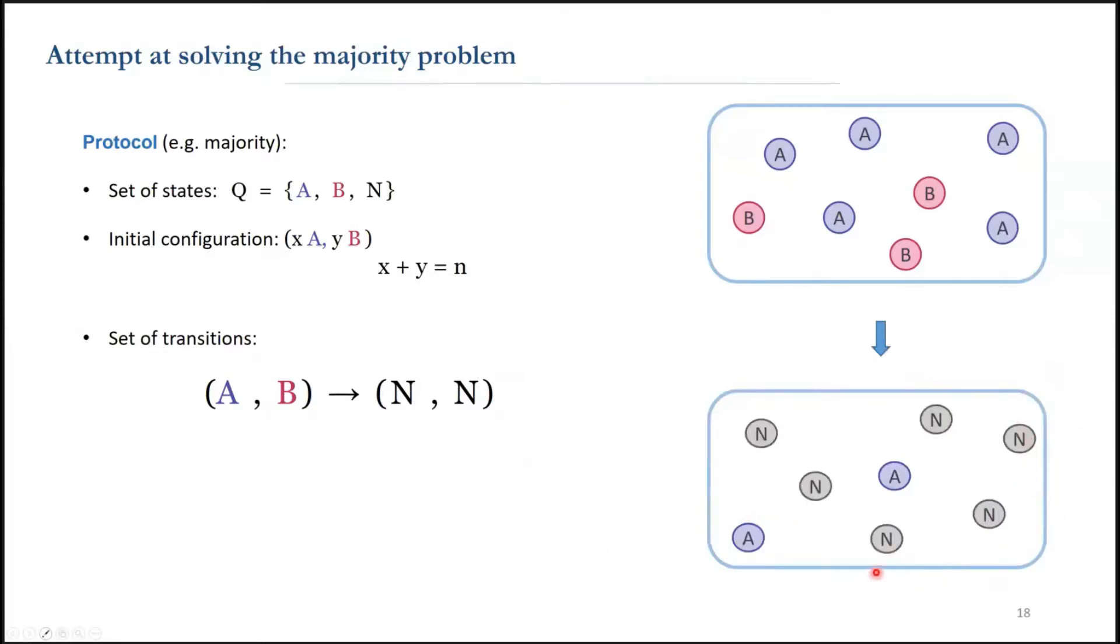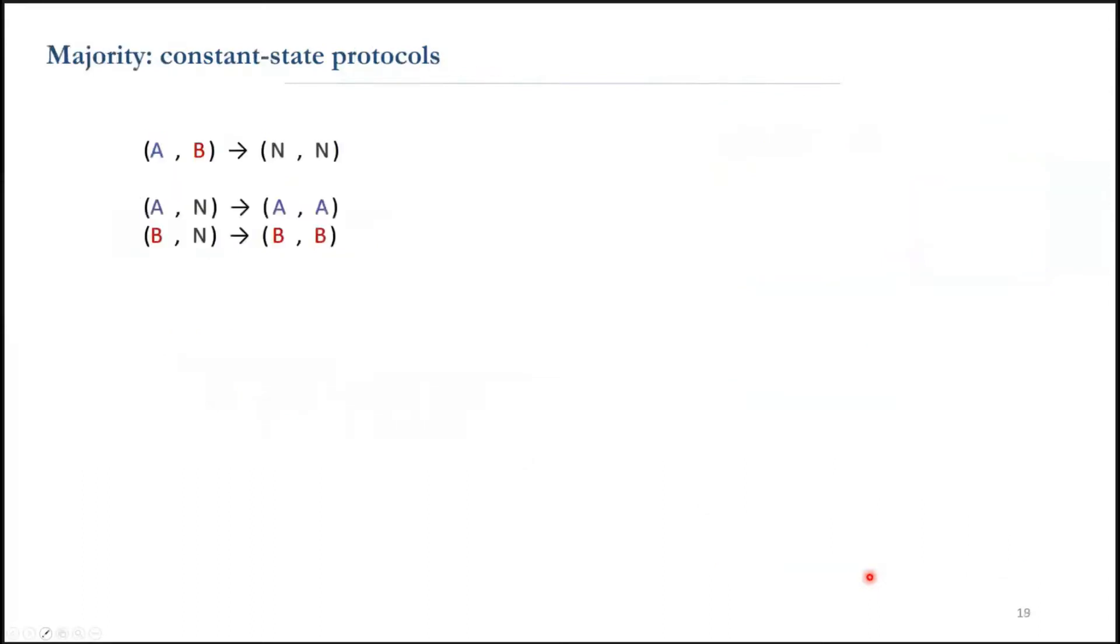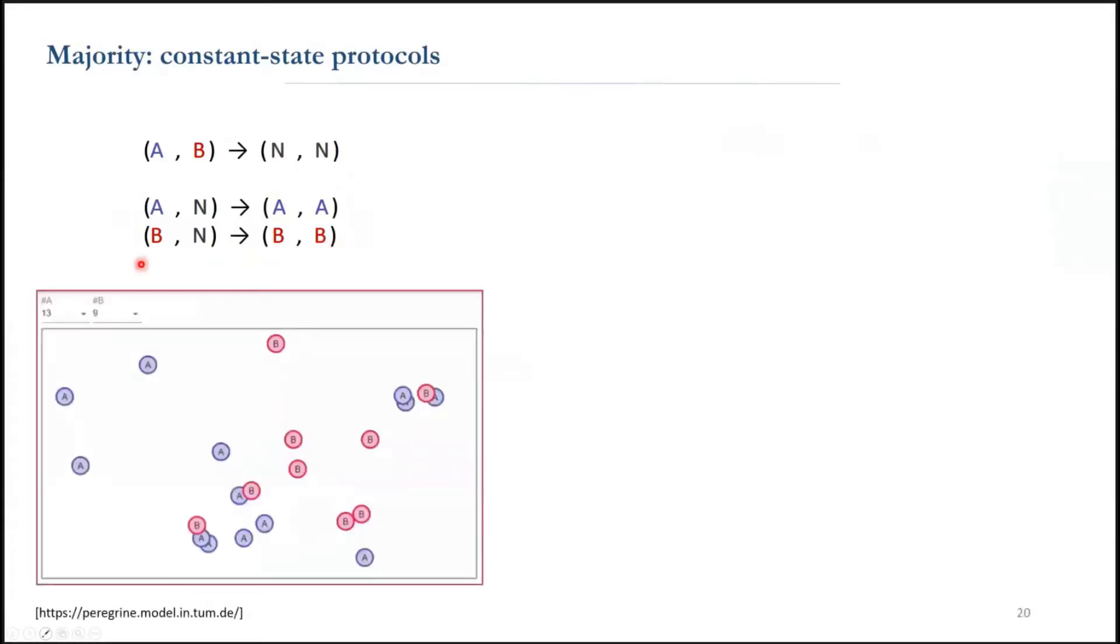Although this protocol will eventually remove all the minority agents with probability 1, it doesn't converge to a consensus. These neutral agents don't know if the majority vote was a or b. So let's inform the rest of the population by epidemic. To get a better intuition, we can look at the simulation results from the peregrine simulator.